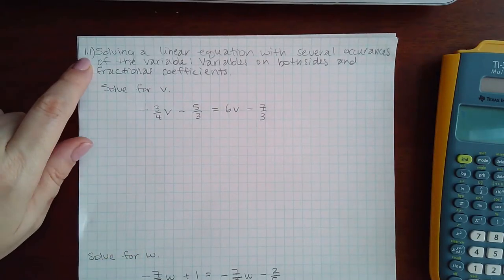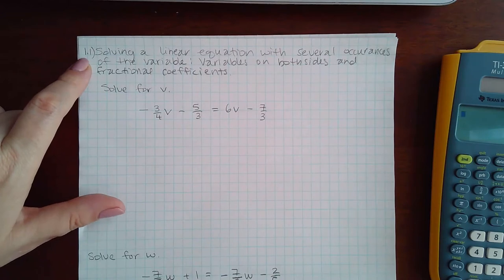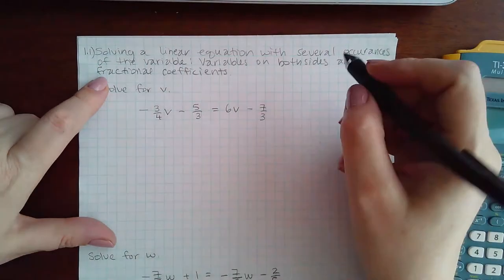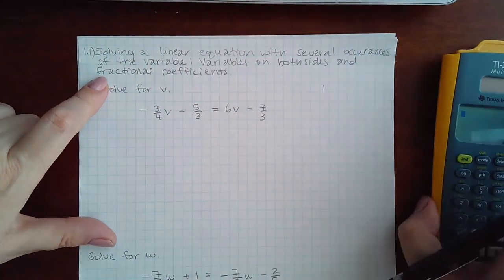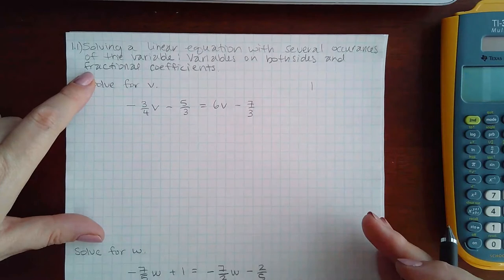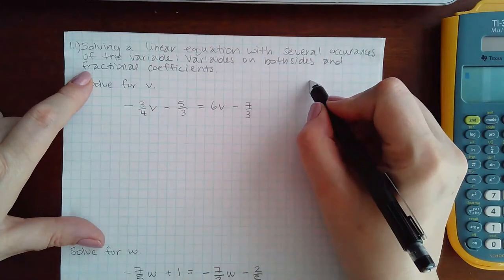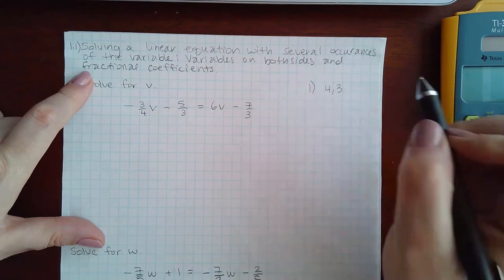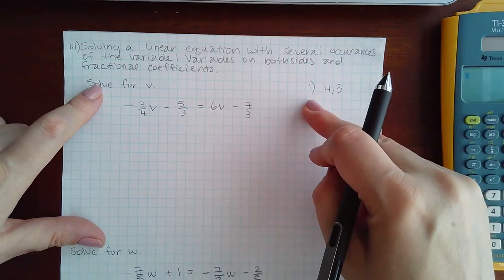Here we have 1.1 solving a linear equation with several occurrences of the variable, variables on both sides and fractional coefficients. So again we do have to do step one which is to get rid of the variables on both sides. Between the denominators 4 and 3, sorry, step 1 is to get rid of the fractions.